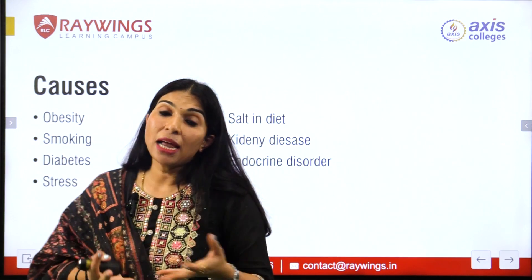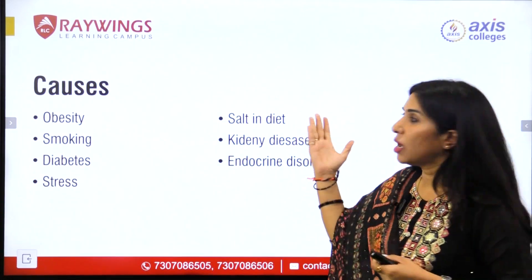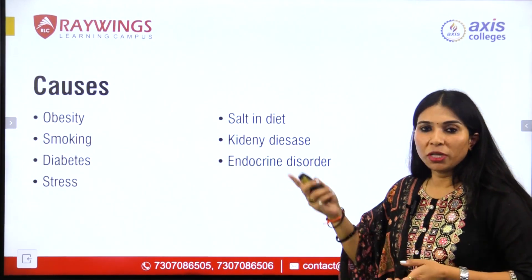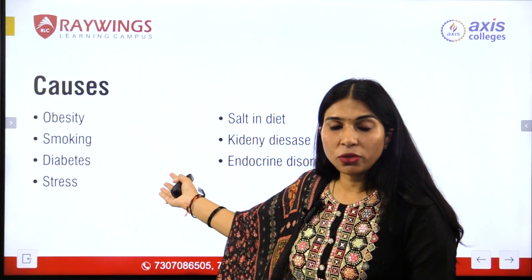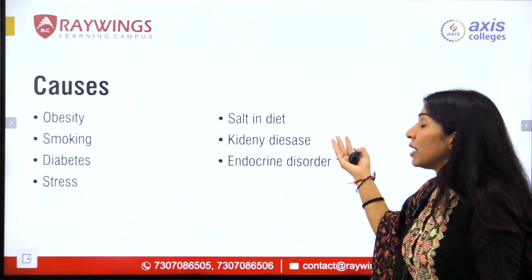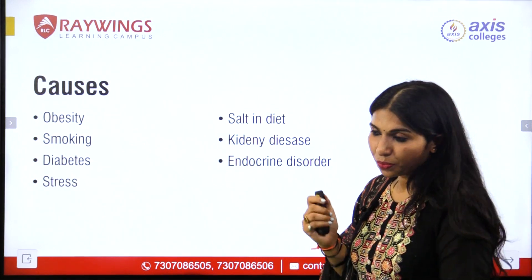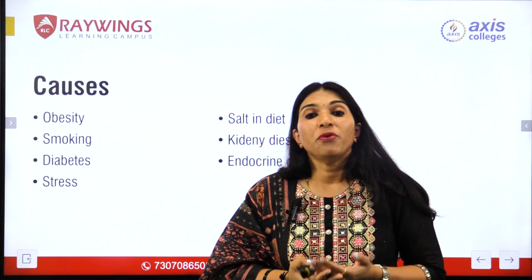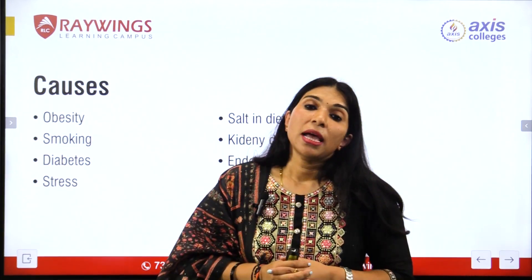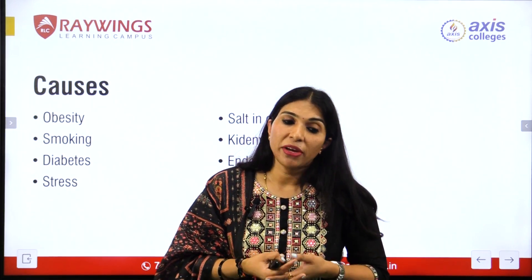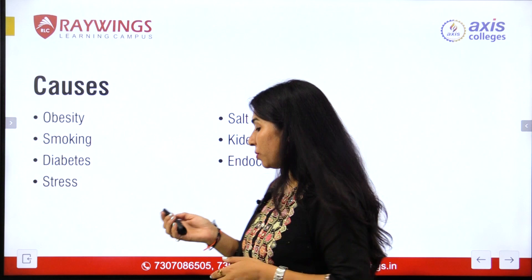The causes of hypertension include obesity, smoking, diabetes, stress, high salt intake in diet, kidney diseases and improper kidney functioning, and endocrine disorders. Endocrine disorders involve the glands and hormones of our endocrine system; if they do not function properly, they can produce the condition of hypertension.